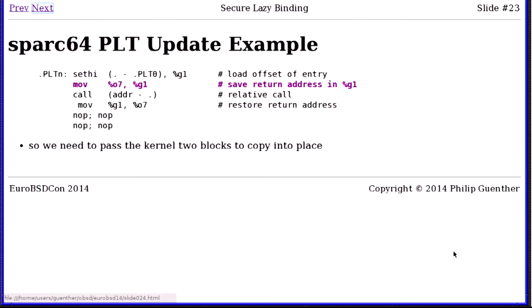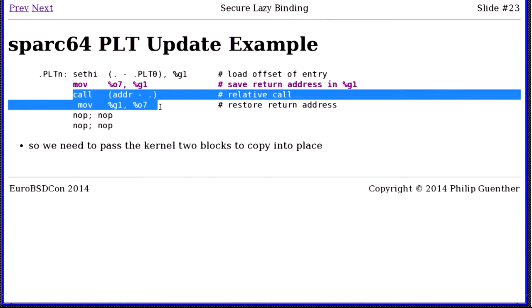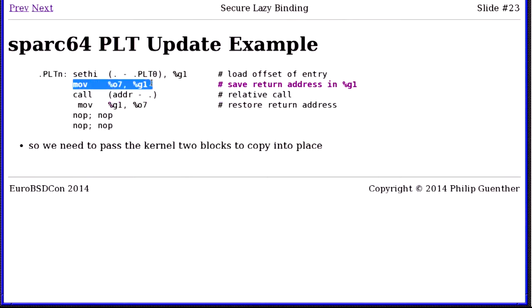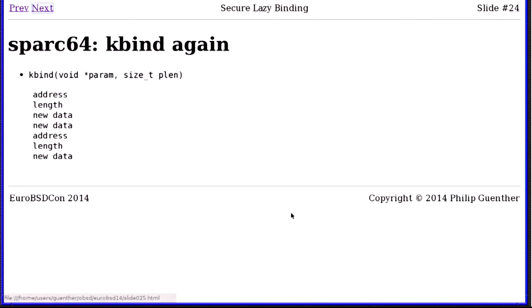For kbind on SPARC64, the kernel needs to know to do the two-step update. Rather than encoding SPARC64-specific knowledge in the kernel, we instead pass the kernel two blocks: one block says update these two instructions, then after that update this instruction. So the kbind signature takes a pointer to parameters containing address, length, data — then another address, length, more data. In the kernel on SPARC64, which has no direct pmap, we force the page to be mapped into the kernel map, poke it directly, then unmap and clean up. This is more like what the other architectures will do.